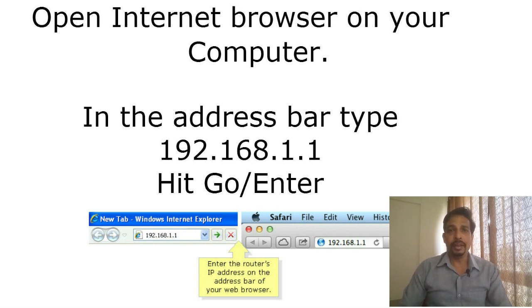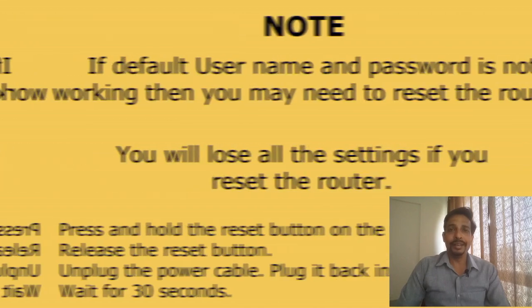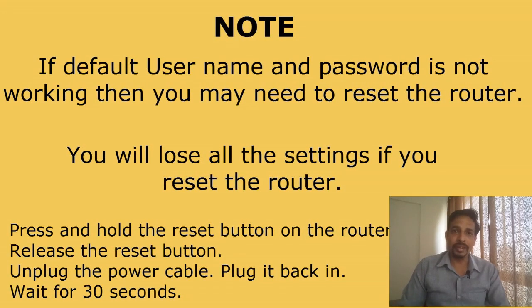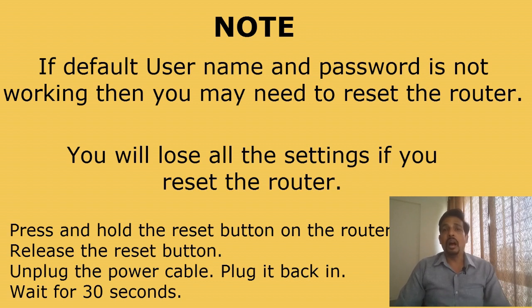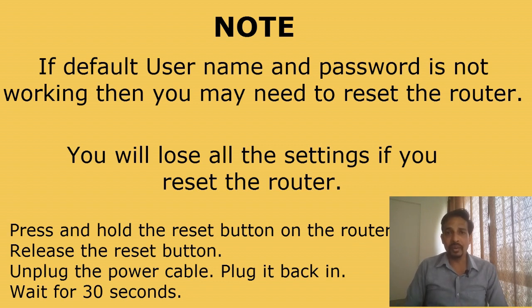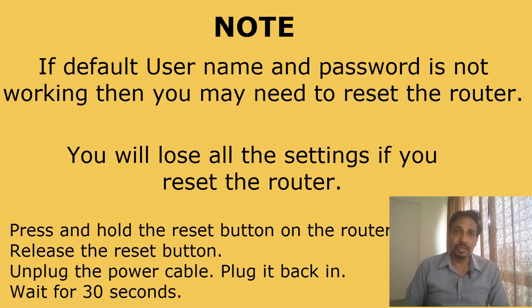If that doesn't work, try 'admin' for both the username and password. If that also doesn't work, you may need to reset the router. Press and hold the reset button for 15 seconds, release it, unplug the power cable, and plug it back in. Wait 30 seconds. Remember, resetting the router returns it to factory default settings and you will lose all your current configuration. Then try 192.168.1.1 again with password 'admin'.